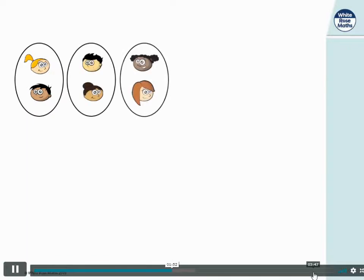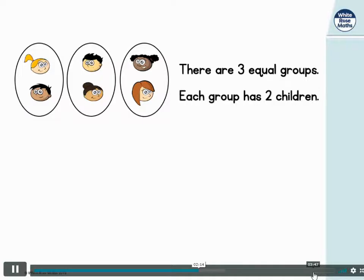Here we have three groups with two children in each group. There are three equal groups. One of the groups has got two girls in, the other groups have got one girl and one boy, but that's not important at the moment because we're looking at the quantity or how many children are in each group, and each group has two children.